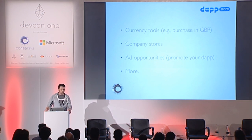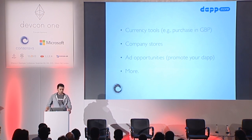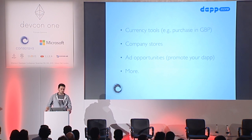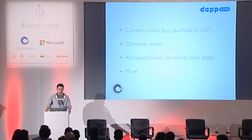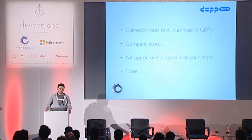Some other things that might be in the future are currency tools. It's great if you can buy a Dapp in Ether, but if you're trying to make your Dapp attractive to the general public, maybe you want them to buy in USD. Another one might be company stores — if you have a company with many Dapps, you might want to brand a portion of the Dapp store to your store. Another source of revenue might be ad opportunities — if the Dapp Store becomes the place where everybody goes to purchase Dapps, it might be very useful to place an ad on the front page.